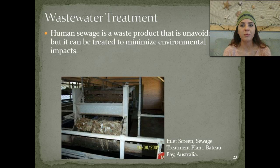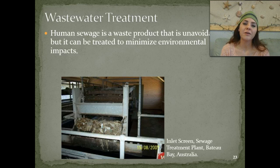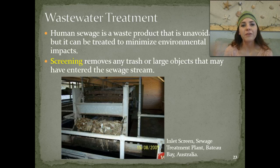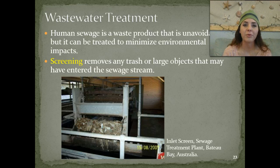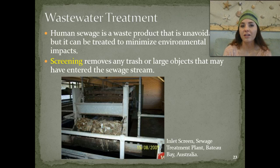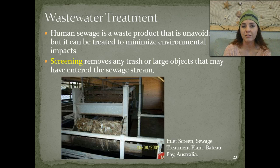Human sewage is obviously a huge problem and it's unavoidable because we all produce waste. But it can actually be treated and minimized in order to reduce the environmental impacts from that waste. So we have the very first process, which is screening. This removes any trash or large objects that may have entered the sewage stream — trash in the form of tampons, toilet paper, paper towels, and baby wipes, which are not supposed to be flushed. All of those different components create a huge amount of trash that has to get screened from the sewage as it comes into the wastewater treatment plants.